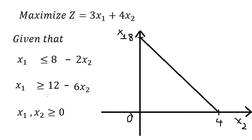The constraint of S1 is greater than or equal to 12 minus 6S2. When S1 equals 0, S2 should be about 2, so number 2 goes here. When S2 equals 0, S1 should be about 12, so number 12 goes somewhere here.